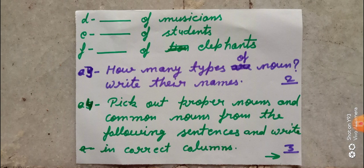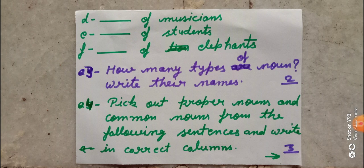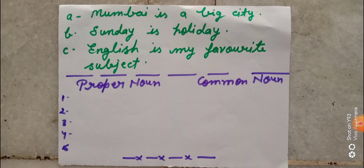Question number four: Pick out proper nouns and common nouns from the following sentences and write them in the correct columns. Aapko neeche kuch sentences diye huye hain. You can see there are three sentences, and you will find out proper nouns and common nouns in these sentences. Aap apni notebook mein same isi tarah se columns banayenge — first of all prepare columns for question number four.